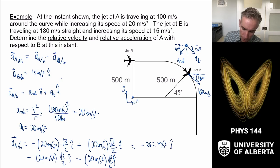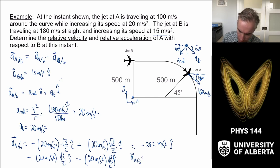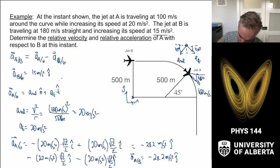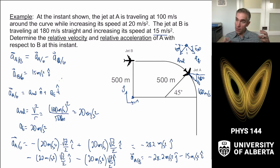To find the acceleration of A with respect to B, we subtract: minus 28.2 meters per second squared j-hat, minus the acceleration of B with respect to ground, which is 15 meters per second squared i-hat. So the acceleration of A with respect to B is minus 15 meters per second squared i-hat minus 28.2 meters per second squared j-hat. This gives us the capacity to figure out both the velocities and accelerations of A with respect to B.